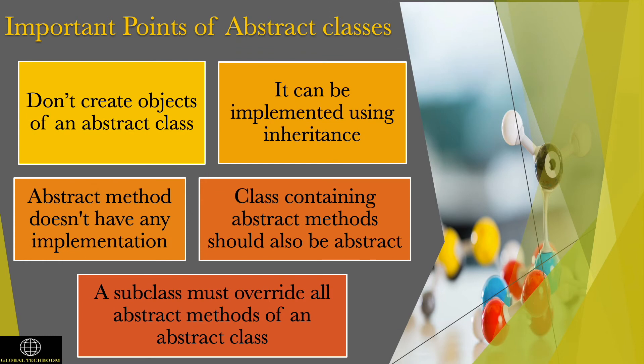Let us see important points of abstract class. We cannot create objects of an abstract class. It can be implemented using the inheritance property. An abstract method inside an abstract class does not have any implementation. A class containing abstract methods should also be declared abstract.